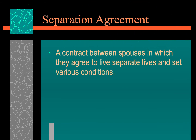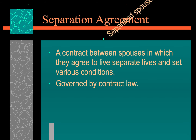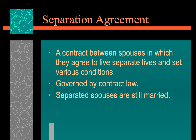A Separation Agreement is a contract between spouses in which they agree to live separate lives and abide by a set of various conditions. It is governed by contract law. During the Separation Agreement, the separated spouses are still legally married but no longer living together. A Separation Agreement will typically last for one year before it can proceed to actual divorce proceedings — the one year is basically a time-out, and it's highly encouraged that both sides seek counseling and social services in the hope that the marriage could be rescued.